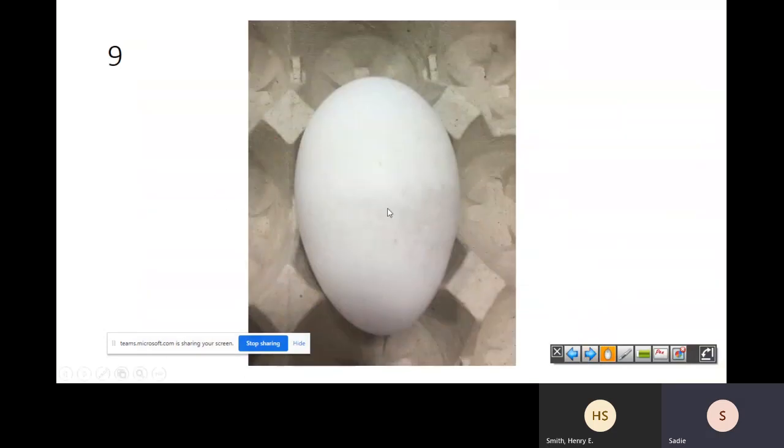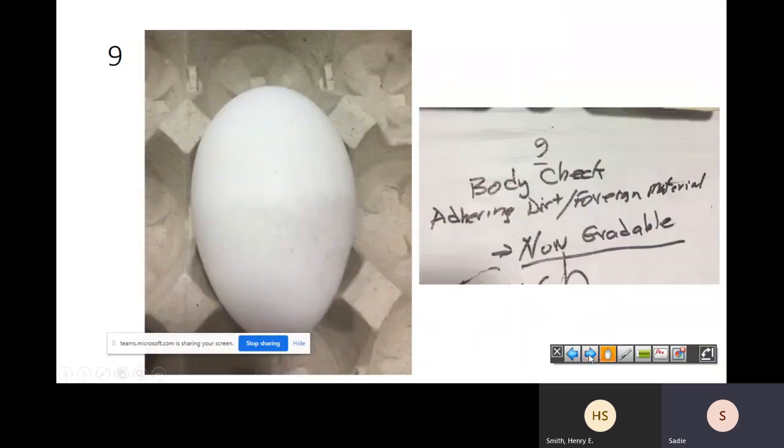And here are the infamous body checks that we talk about right here. You can see this in the middle right here. It's kind of difficult to see some of the little lines, but you can see the little lines to where it almost looked like it would be checked, but this is a body check. It's occurring in that equator right through here in the middle of that egg. And it also has adhering dirt foreign material. Might be here. I'm not sure exactly where. So it's going to be non gradable. The body check, if it was just the body checked, it would have been a B. But since there's some foreign material there, it's non gradable.